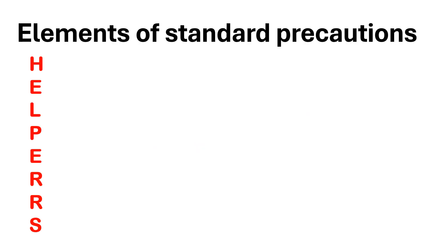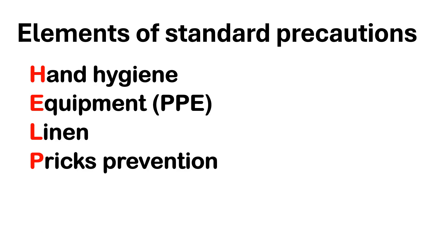What are the elements of standard precautions? Use the acronym HELPERS to help you remember. H stands for hand hygiene, which can be handwashing or use of alcohol-based hand rub. E is equipment — personal protective equipment, which we'll review later. L is linen — dispose of linen properly and separate linens that contain bodily fluids. P is pricks prevention — never recap needles.